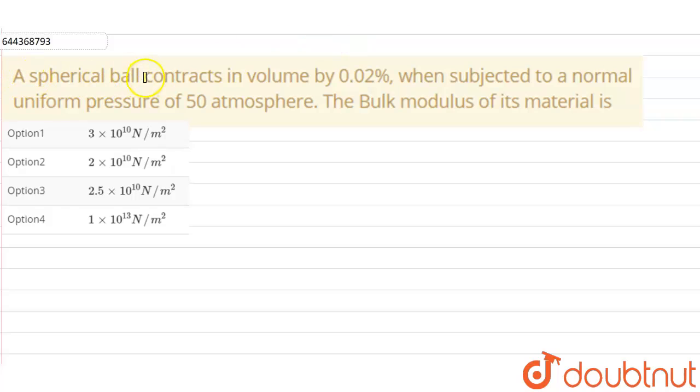Hello everyone, so our question is: a spherical ball contracts in volume by 0.02% when subjected to a normal uniform pressure of 50 atm, the bulk modulus of its material is. So, in the question we have been given that a spherical ball is getting contracted in the volume by 0.02%.